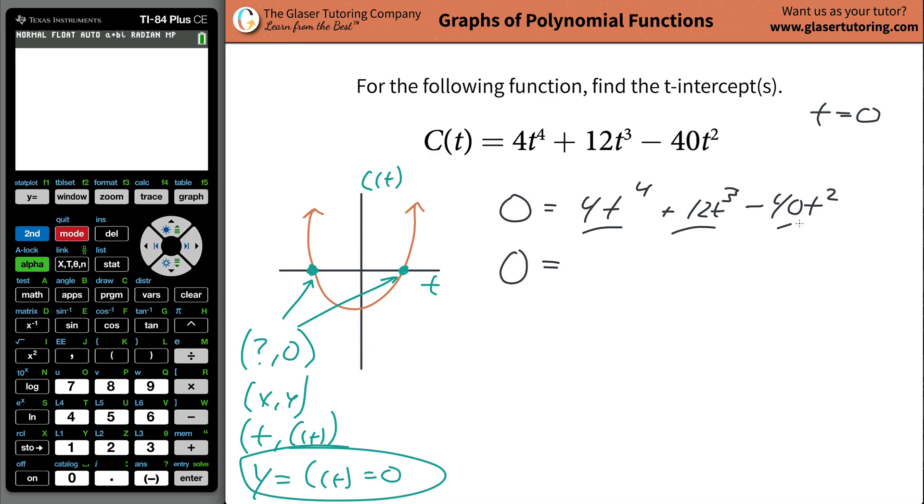I'm looking to see what terms all three of these have in common. I know that I can pull out a t squared from every term. I also know that I can pull out a four from every term. I can pull this out from every term, and then what I would be left with is t squared, then 3t, and this term would now be minus 10.